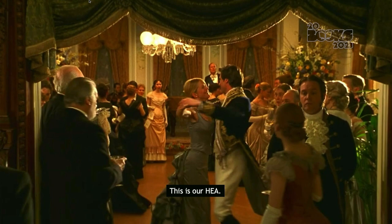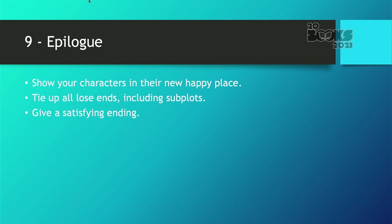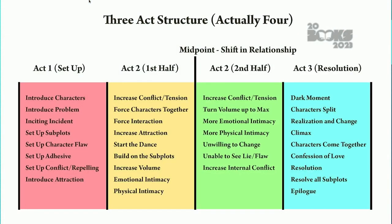In a book, I would suggest not ending with the happily ever after — I would put an epilogue on the end, because a lot of readers want to see your characters in their happy space after they have either married or just later on in their relationship where they're happy. Show your characters in their new happy place, tie up all loose ends, and any subplots that you started that you didn't tie up, tie up in the epilogue. Give a satisfying ending to your readers. So the act three chart: you have the dark moment, the characters split, the realization and change — because they should be changing throughout the entire book and the dark moment is where they realize that change — then the climax, the characters come together, the confession of love, the resolution, resolving all the subplots, and the epilogue.